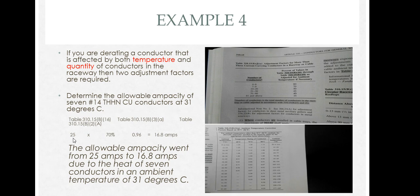We simply multiply 25, which is our starting ampacity of a number 14 THHN, by 0.7 and by 0.96, and we get an ending derated ampacity of 16.8 amps. That's the allowable ampacity for those seven conductors in the raceway. We went from 25 amps to 16.8 amps due to the amount of conductors in the raceway and the temperature of the ambient environment.